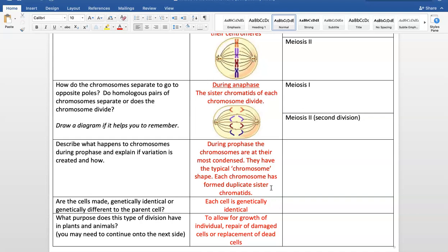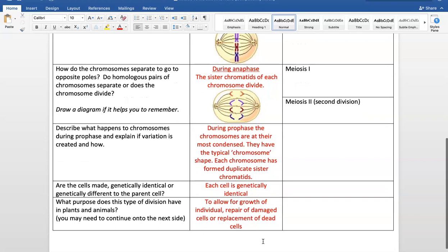Are the cells made genetically identical or genetically different? Well, we have no reason to make them genetically different if it's a body cell. That only happens in gametic cells. So each cell is genetically identical to that mother cell. And what purpose does this type of division have in plants and cells? Of course, it allows for the growth of the individual, repair of damaged cells or replacement of dead cells.